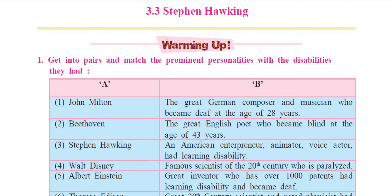Hello dear students, I am Dr. Sandeep Gauthier. I welcome you all to my YouTube channel English Guru for All. In today's video lesson we are going to discuss the most important lesson from unit number three. This is the third lesson and the title is Stephen Hawking. He was an English theoretical physicist, cosmologist, author and director. He was born on 8th January 1942 and he died on 14th March 2018.